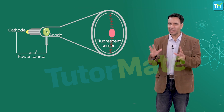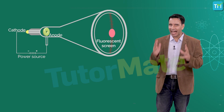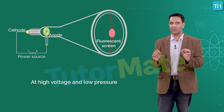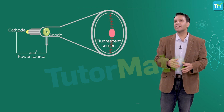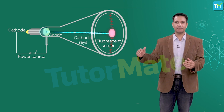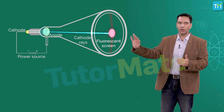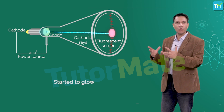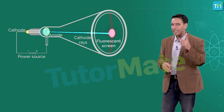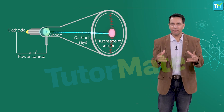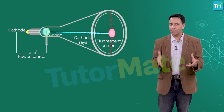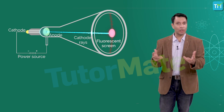In a dark room, when an electric current is passed through a gas at high voltage and low pressure, Thomson found that a stream of minute particles is let out by the cathode. The small hole on the anode allowed this beam to pass through, and when it struck the fluorescent wall it started to glow. From this, he concluded that these particles came from within the atom, and that Dalton was incorrect in stating that atoms cannot be further divided.